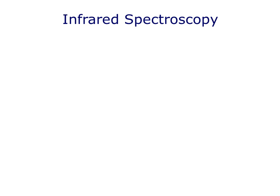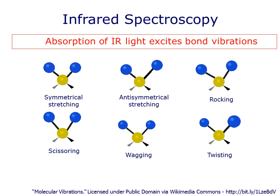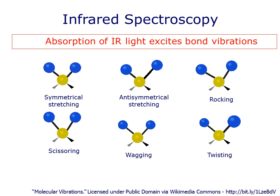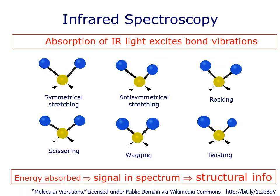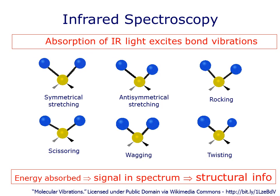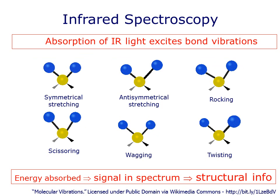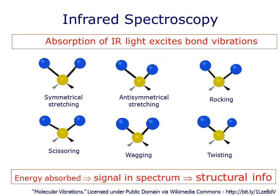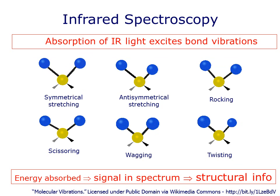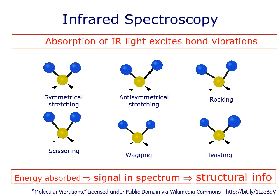Starting then with IR spectroscopy. Energy at IR wavelengths causes bonds to vibrate. A range of different vibrations are possible, depending on the shape of the molecule and the bonds that are present. The precise energy of IR radiation that is absorbed depends on the type of vibration and the types of bond. So this gives us a method to investigate what sorts of bonds are present in our molecule.